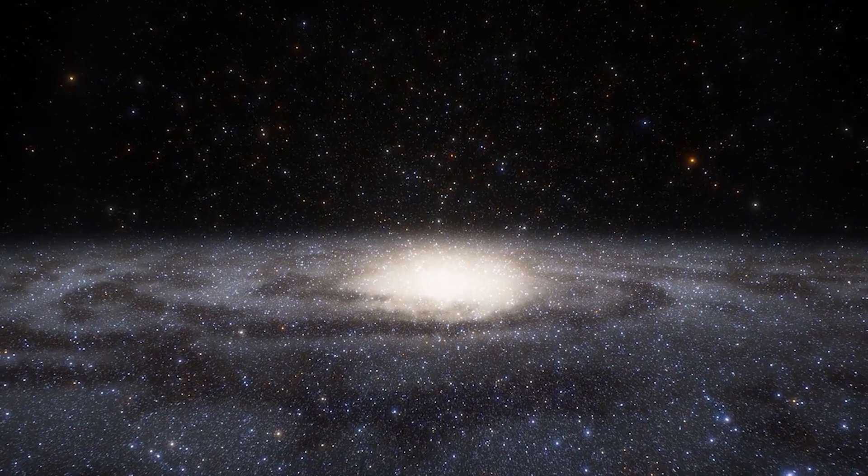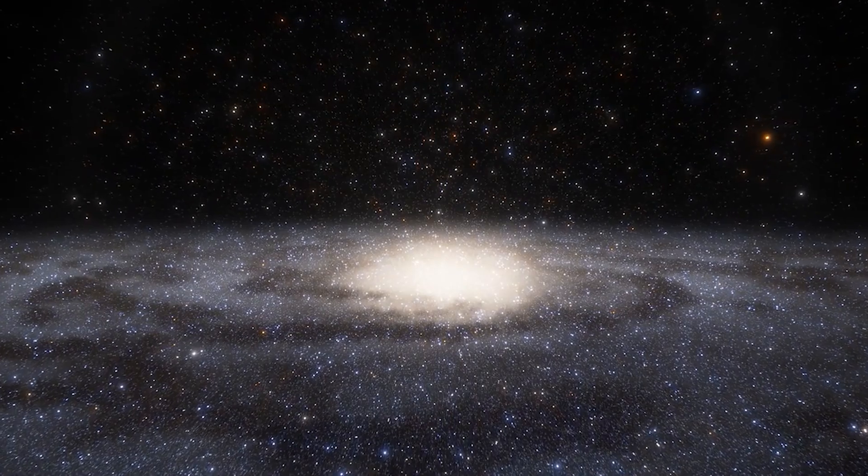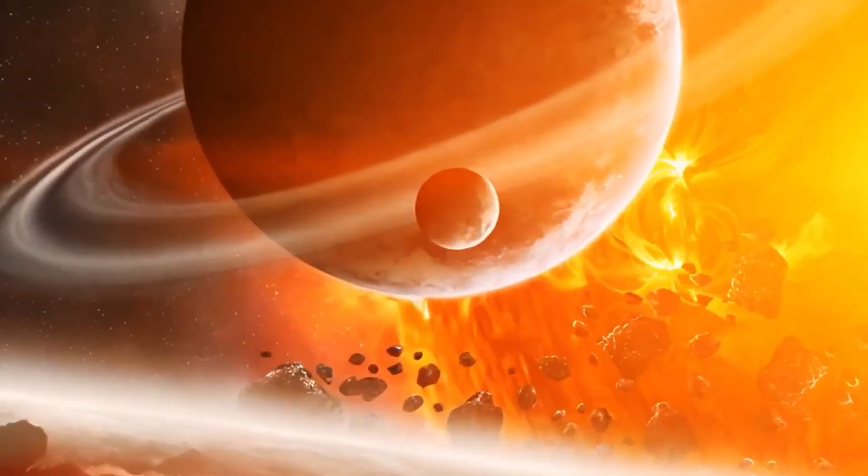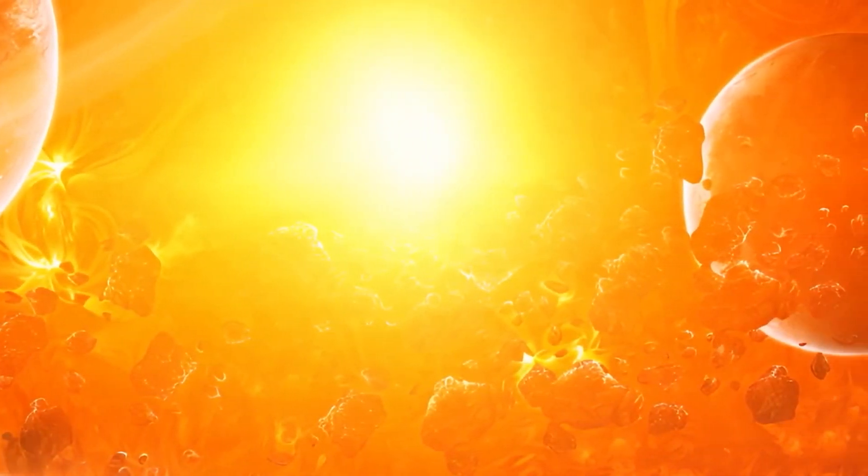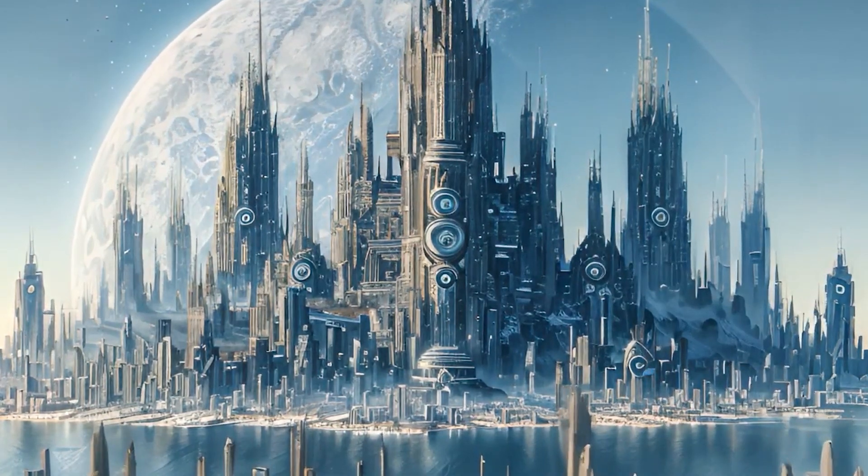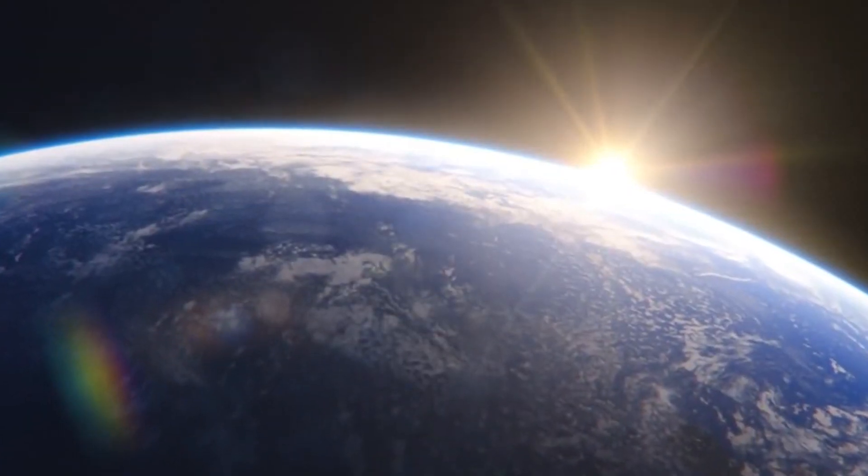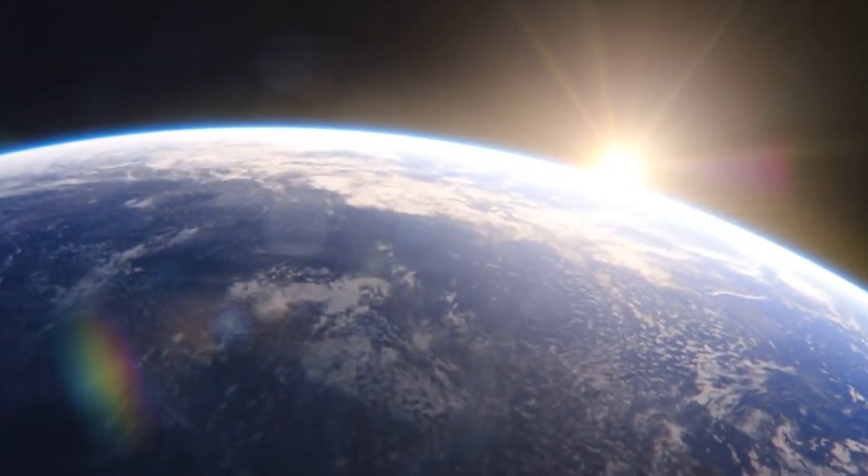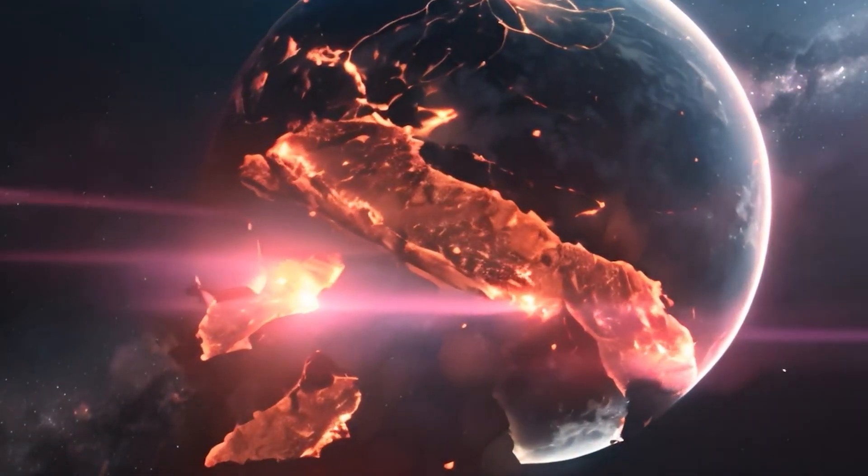This paradox brings us to the concept of the Great Filter, a theoretical phase in the evolution of life that is extremely difficult to pass through. The Great Filter proposes that at some stage, from pre-life to an advanced civilization capable of colonizing galaxies, there is a highly improbable step. This barrier could lie behind us, with humanity being one of the few to have crossed it, or it might loom ahead, posing challenges we have yet to encounter or comprehend.